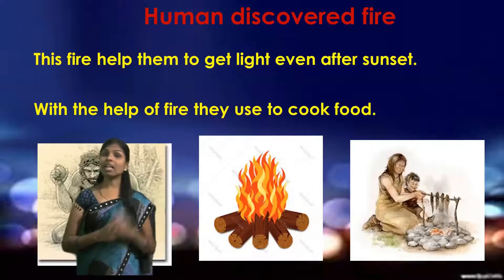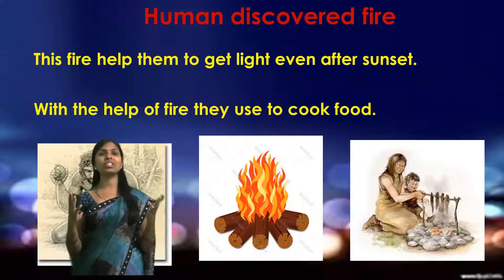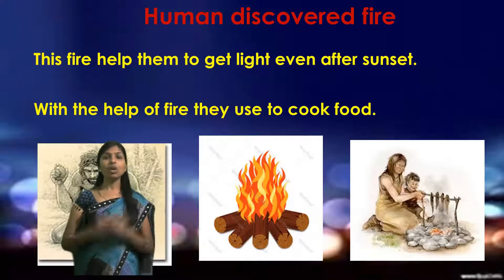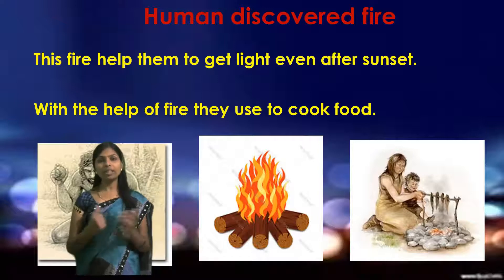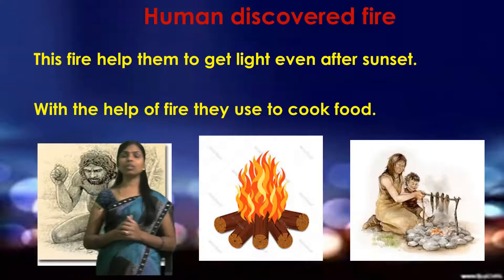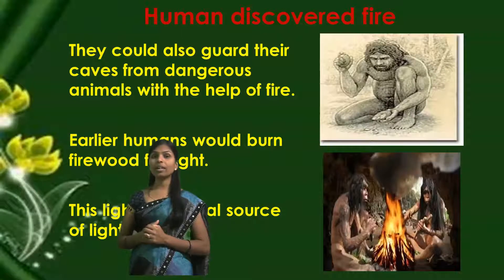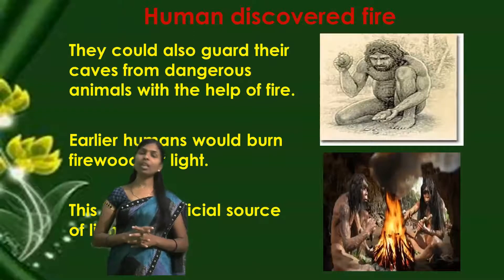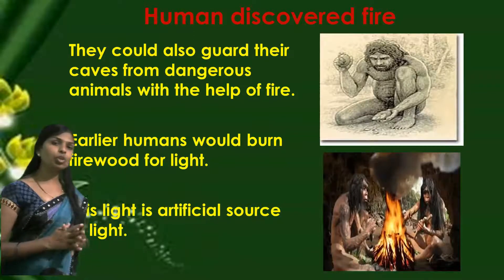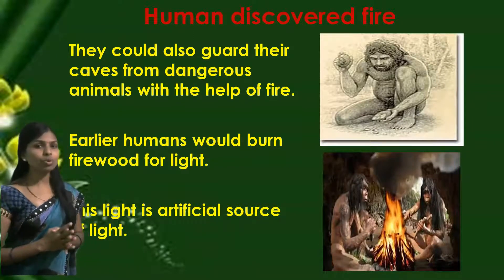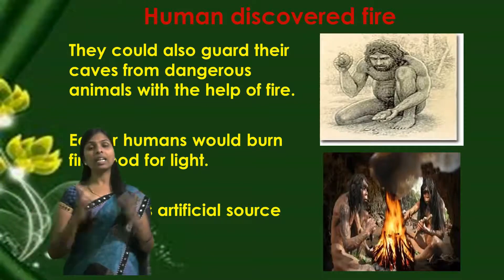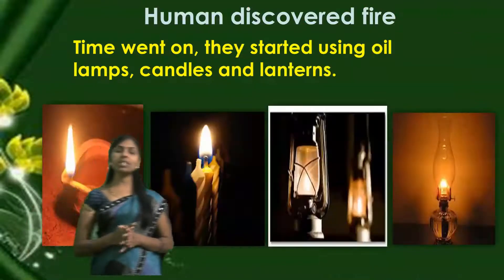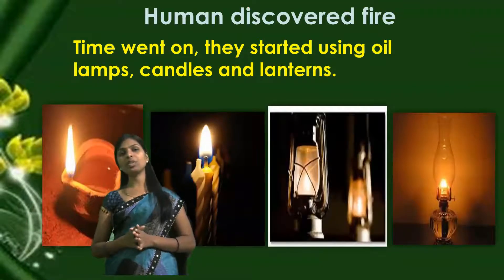These fires helped them to get light after sunlight as well. At night times, they were using fire. With the help of fire, they cooked food. They also used fire to guard against dangerous animals. Early humans would burn firewood for light. So fire is one example of an artificial source of light.